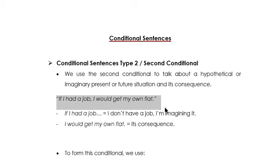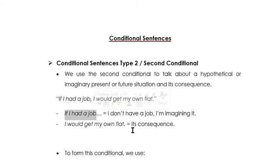Si yo tuviese un trabajo — sería nuestra situación imaginaria. Nuestra situación imaginaria siempre va a estar en la if clause. And 'I would get my own flat' would be its consequence, its possible consequence. If I had a job — si yo tengo un trabajo — I would get my own flat — conseguiré mi propio departamento. Tenemos lo que sería nuestra situación imaginaria y cuál sería esa consecuencia de esta situación.